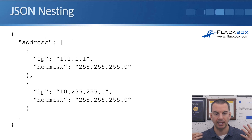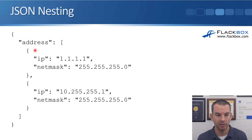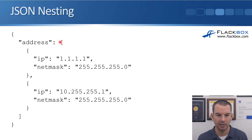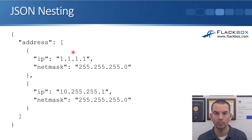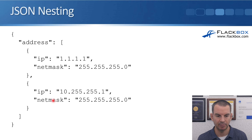Another example of nesting: we've got an object opening and closing, and inside it we have an array. In the array, we've got two objects nested — the first IP address and subnet mask, and then the second IP address and subnet mask.